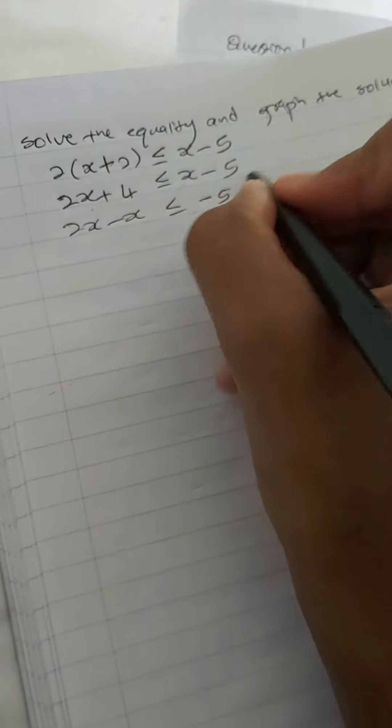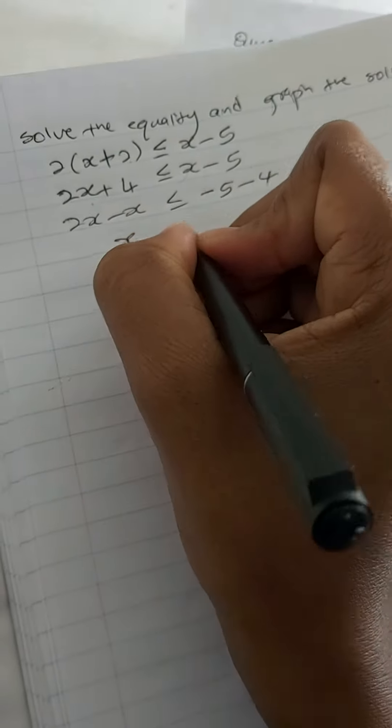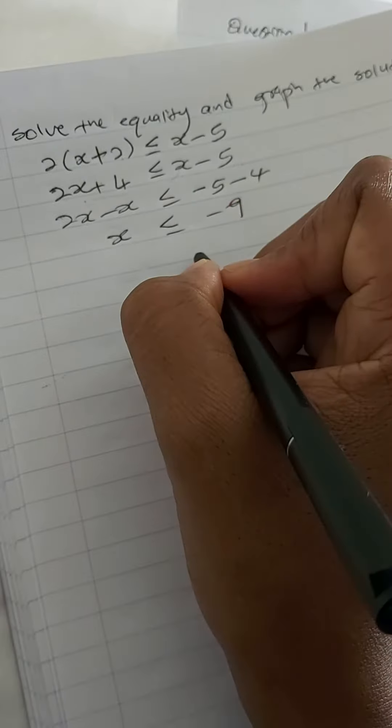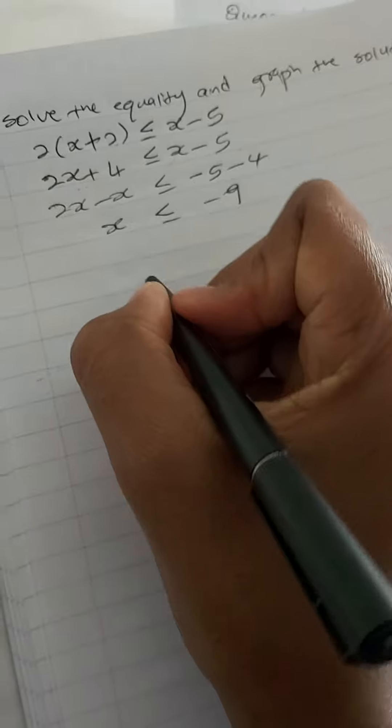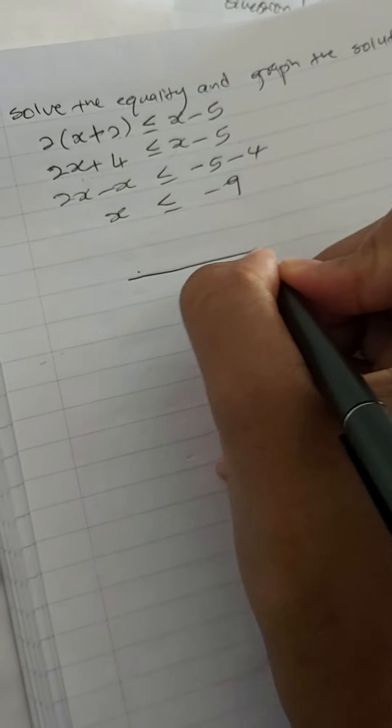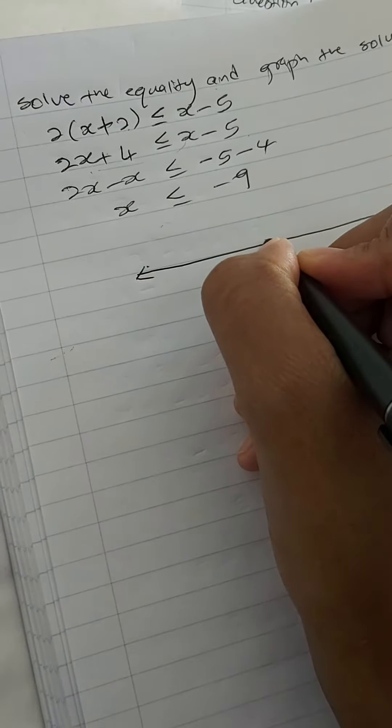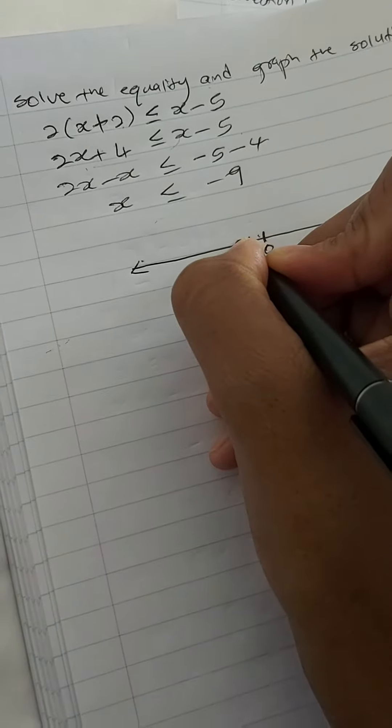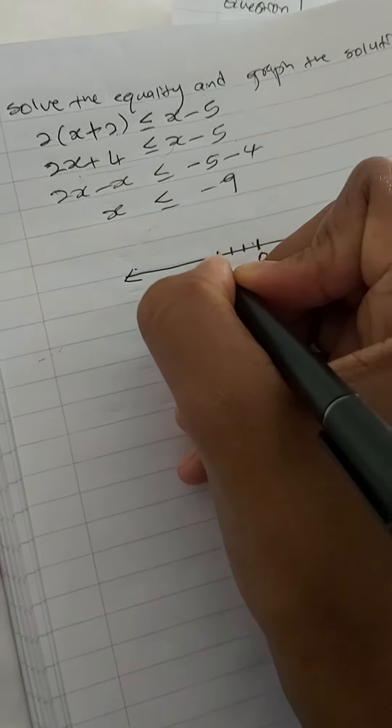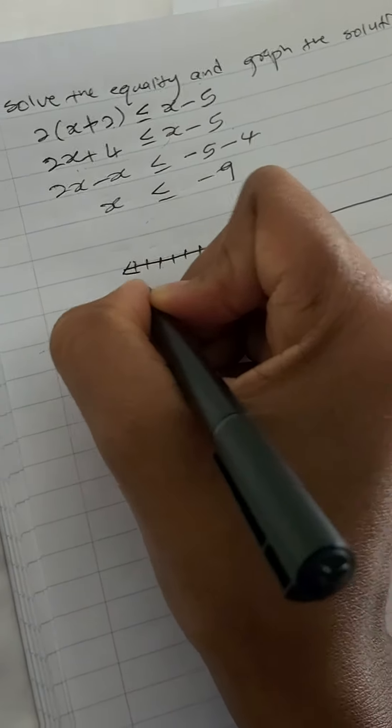minus 5, and we move 4 to this side which becomes minus 4. So x is less or equal to minus 9. Then we must plot it on a number line. Let's say we've got 0, minus 1, minus 2, minus 3, minus 4, minus 5, minus 6, minus 7, minus 8, minus 9.